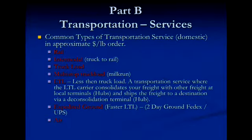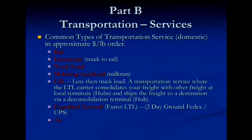In terms of domestic U.S. transportation — and most people already know this — in terms of dollars per pound, rail is going to be your cheapest. Obviously, barge is even cheaper than rail, but barge is somewhat limited in this country. Your next cheapest option is typically intermodal, where you take the container off the truck, you put it on a trailer — the chassis and the container separate — and then you put it on the train.